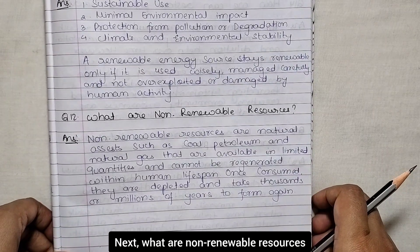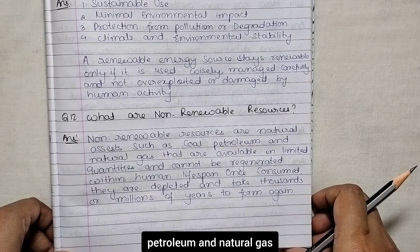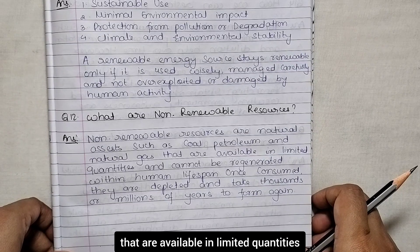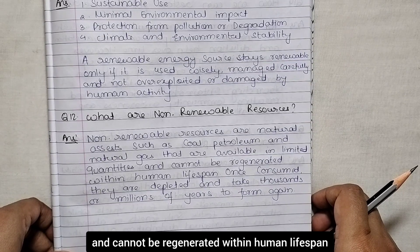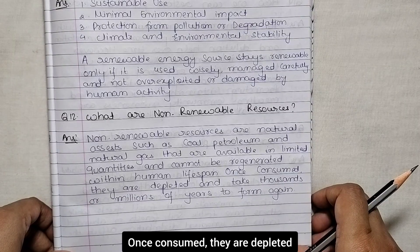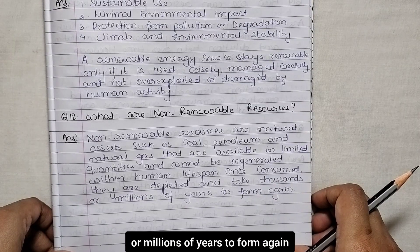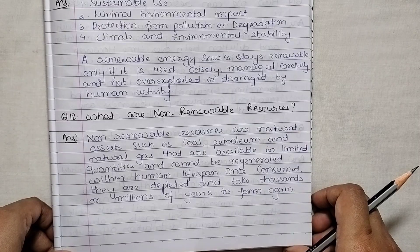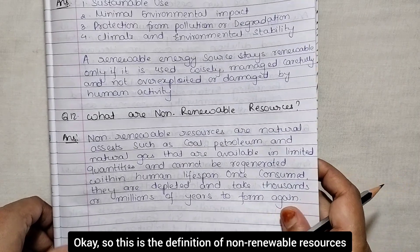Next: what are non-renewable resources? Non-renewable resources are natural assets such as coal, petroleum and natural gas that are available in limited quantities and cannot be regenerated within a human lifespan. Once consumed, they are depleted and take thousands or millions of years to form again.